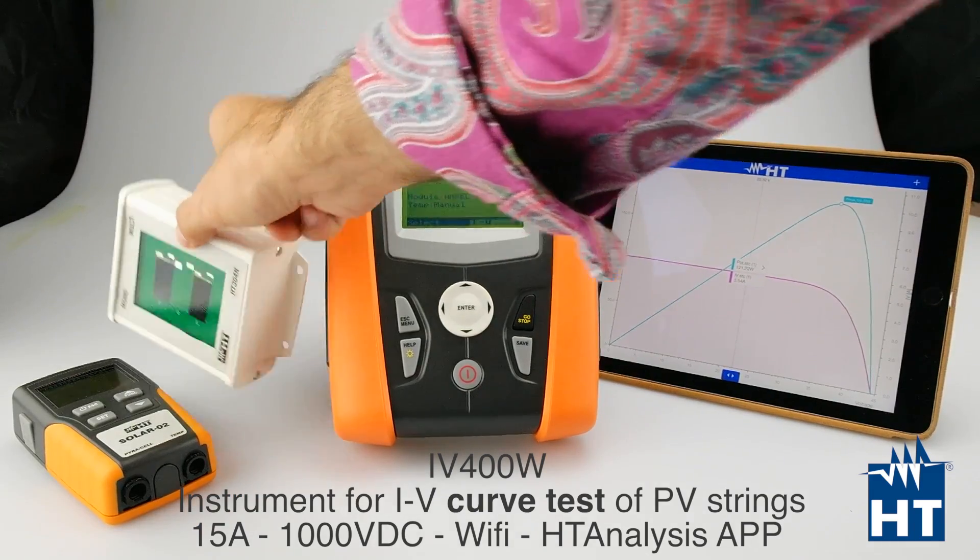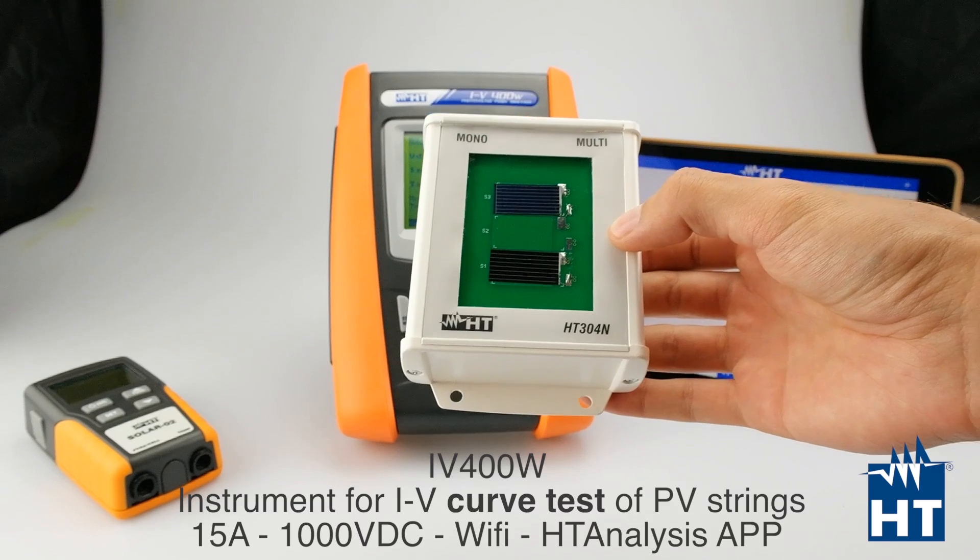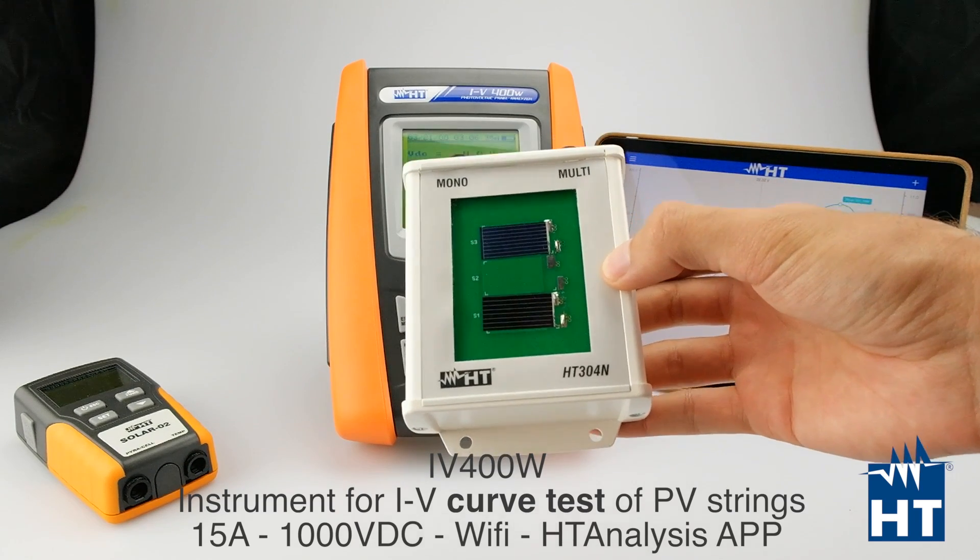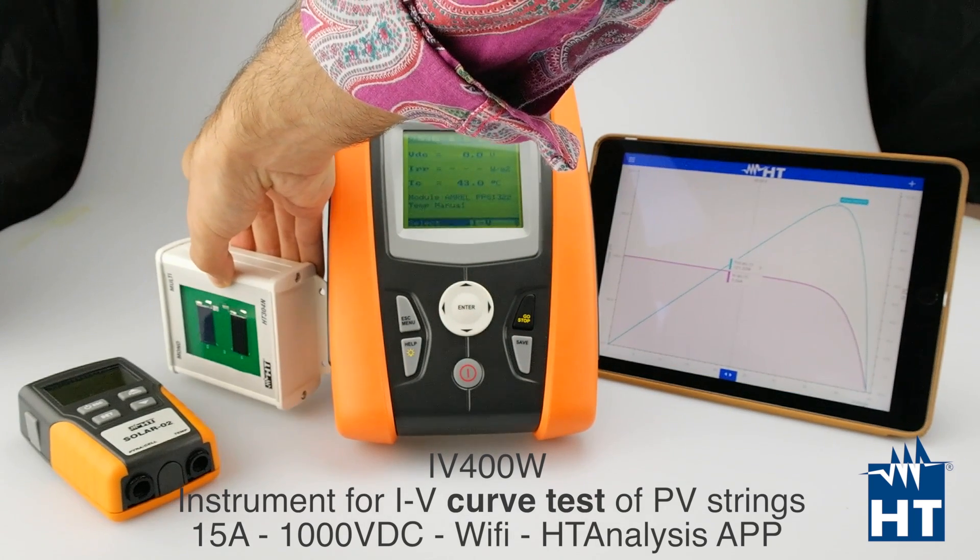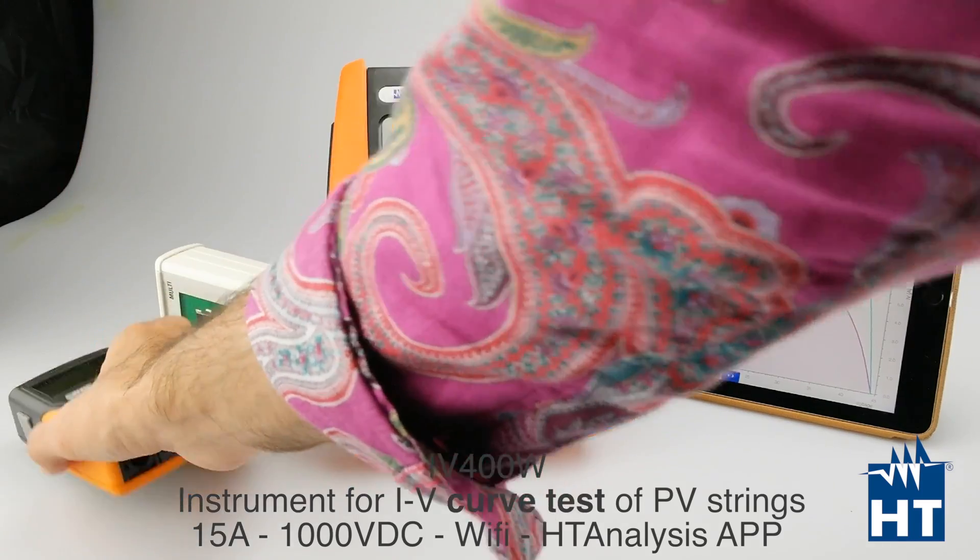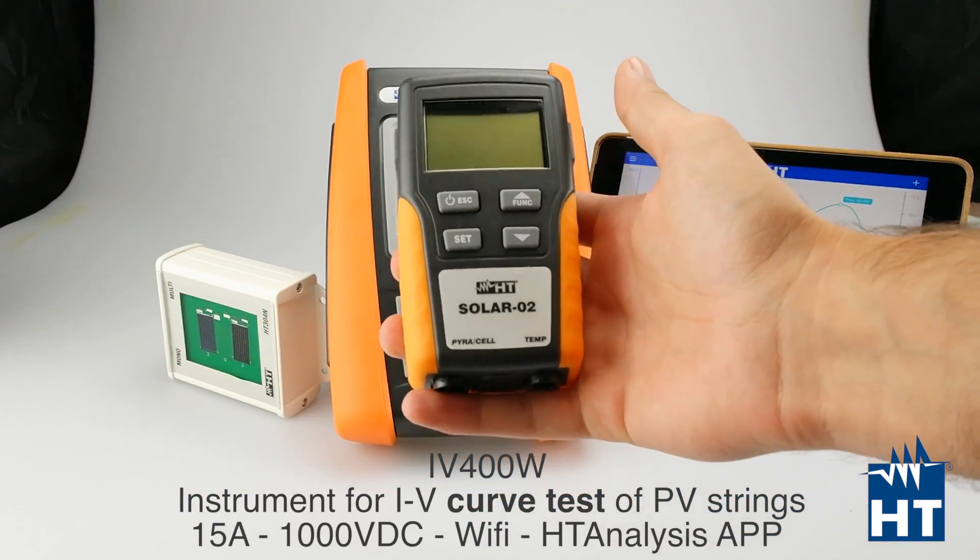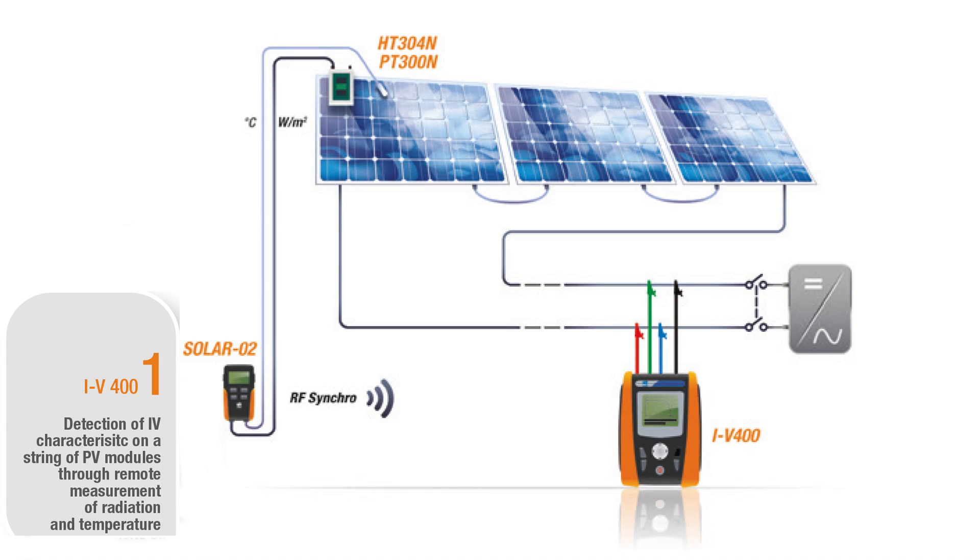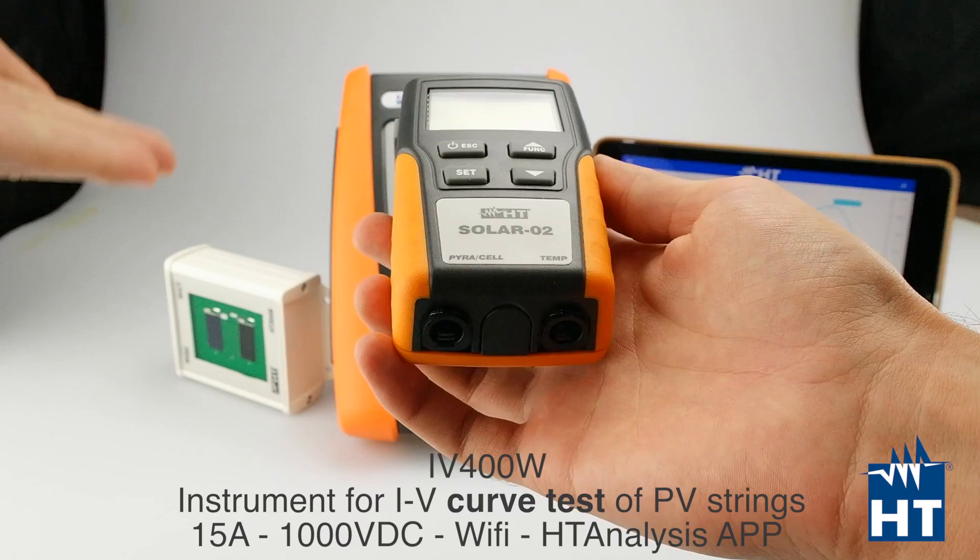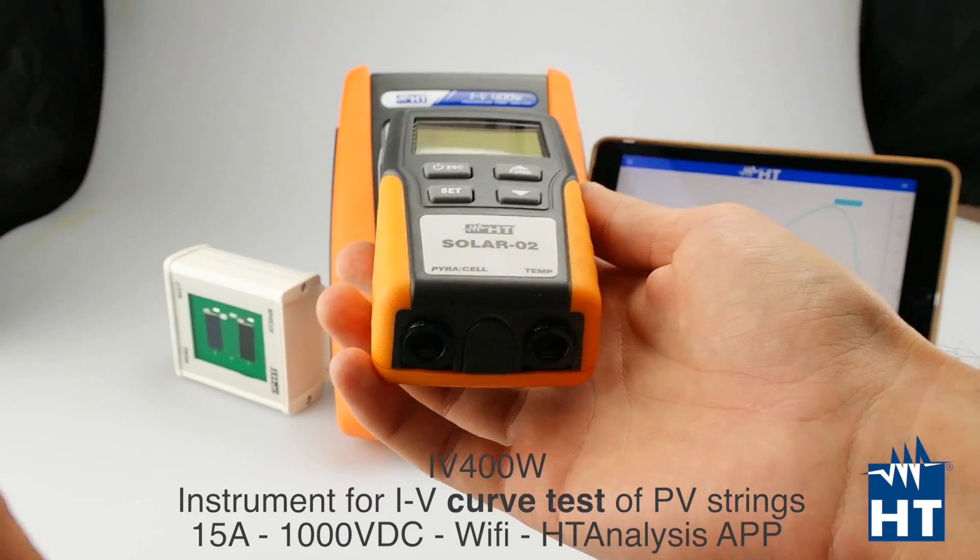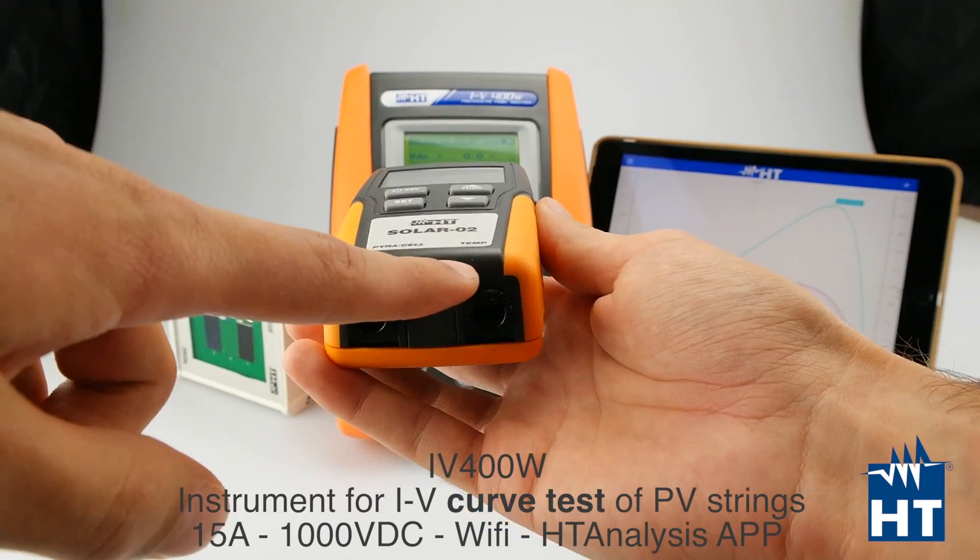You can find as a standard accessory this reference cell that you can use to measure irradiance and is able to measure for mono panels or multi panels. Also, you have a possibility to buy this optional accessory, which is called Solar O2, that can automate your measurements. You can connect the solar irradiance sensor HT304N and the temperature probe.